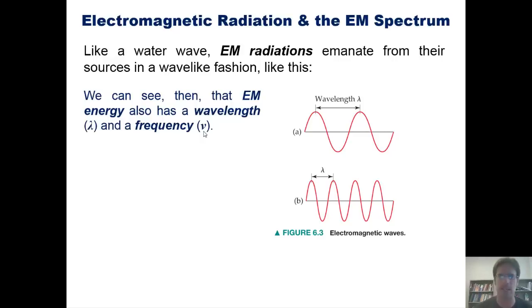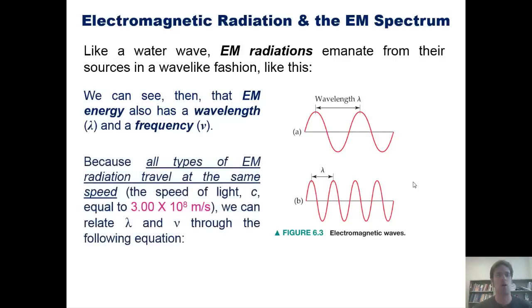And now to blow your minds. See, as it turns out, all types of EM radiation travel at the same speed, which is the speed of light that happens to be 3 times 10 to the 8th meters per second, which is kind of fast. Because of that, we can relate wavelength and frequency using this equation from our text.